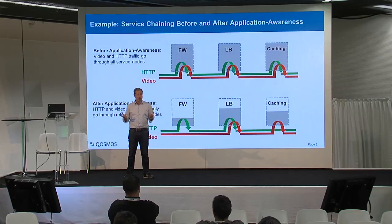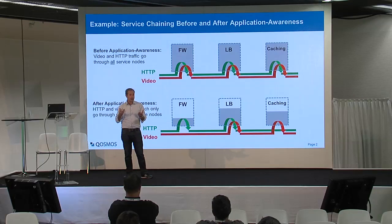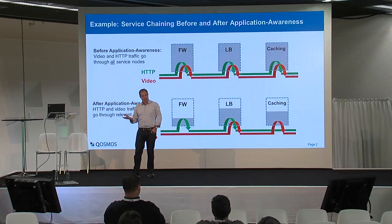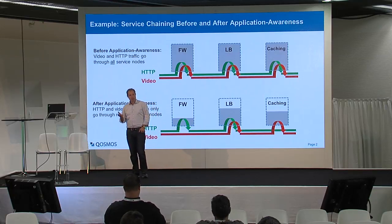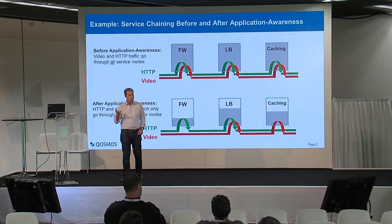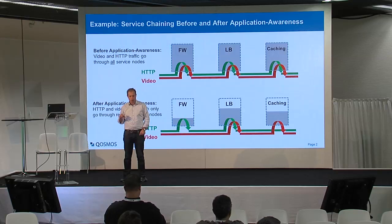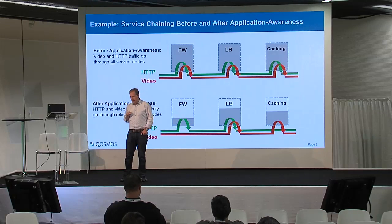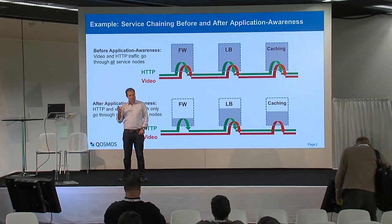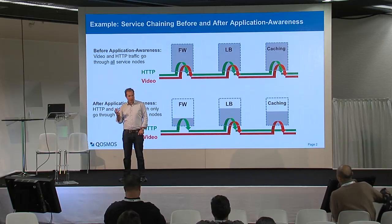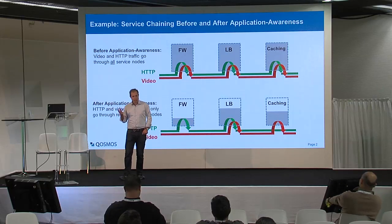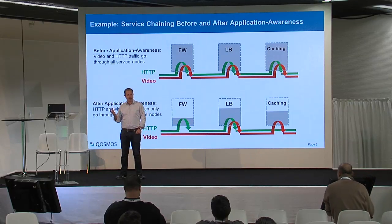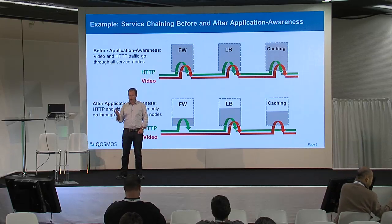That's very inefficient because many of the flows shouldn't have to go to all of these boxes. People are thinking about service chaining to make that more efficient so that you can automate the placement of middle boxes, but in general it's not application-aware. What we'd like to do with application-aware service chaining is make sure that only the right flows go to the right boxes.